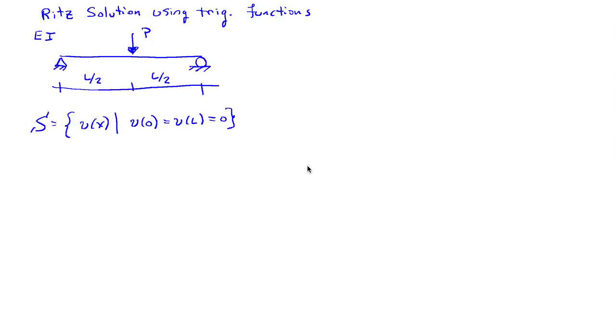In this example, I'd like to consider using a Ritz solution with trigonometric functions to approximate the deflection of a simply supported beam with a point force in the middle. So the solution space consists of all functions v of x such that they are equal to 0 at the two endpoints.